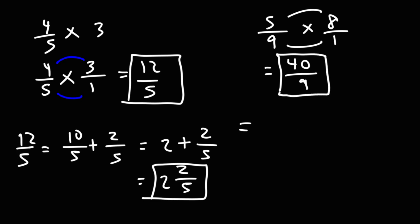To convert it to a mixed number, how many times does 9 go into 40? 9 goes into 40 four times. 9 times 4 is 36. 40 minus 36 is 4. So as a mixed number, it's 4 and 4/9.